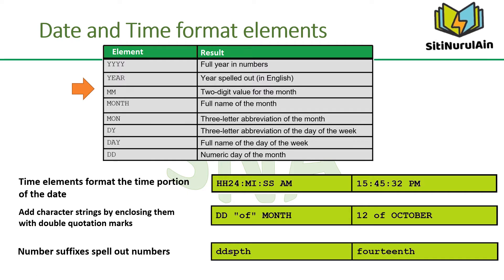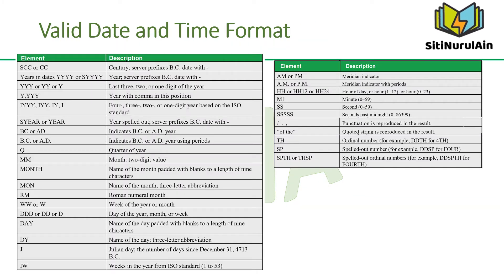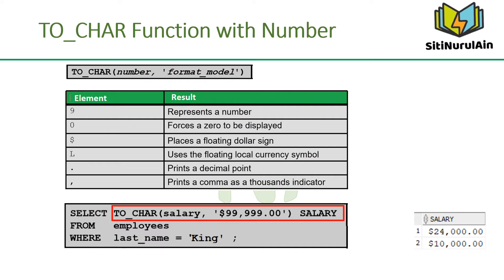The slide shows the time elements that format the time portion of the date. You can add character strings by enclosing them with double quotation marks. The slide also shows the use of number suffixes to spell out numbers. These are all valid elements for date and time that can be used as a format for the TO_CHAR function. Some elements of the format model can also be used with TO_CHAR to display number values as characters, and the SQL in the slide shows an example using some of the numeric elements.